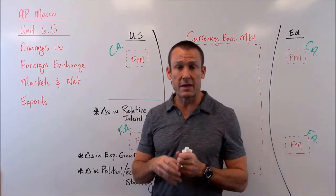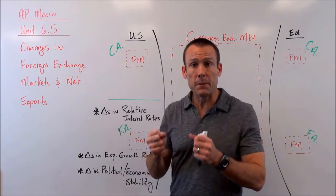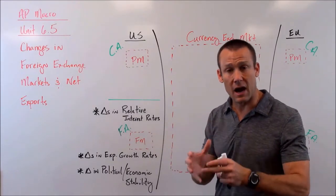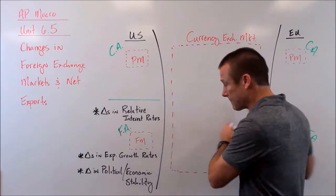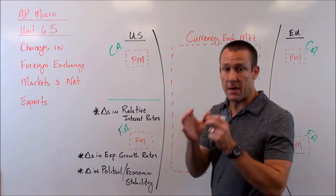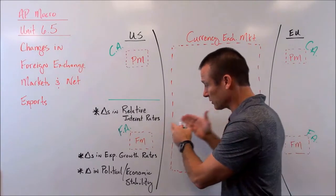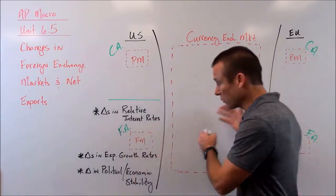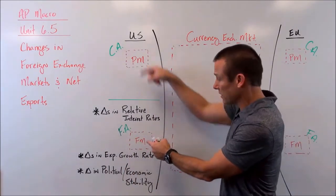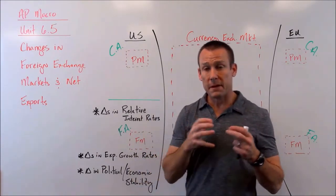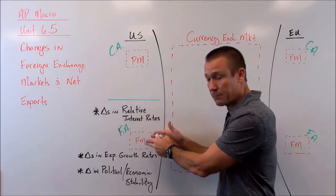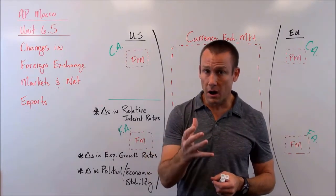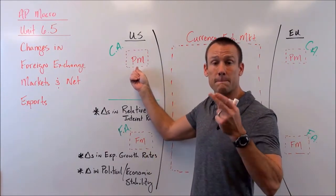First: changes in relative interest rates. If the US interest rate goes up, people are going to want to put more financial capital in those markets - money goes where interest rates are higher. If interest rates go up in the US, money is going to flow towards the US financial market. That flow of money internationally towards US financial markets is going to cause the dollar to appreciate. The only way to get financial capital into the US financial market is to have dollars, so people around the world will demand the dollar.